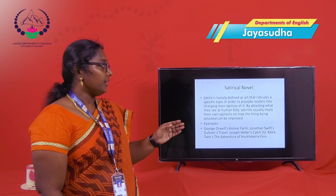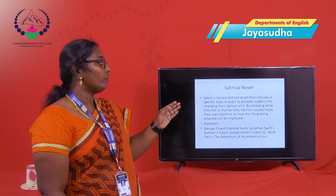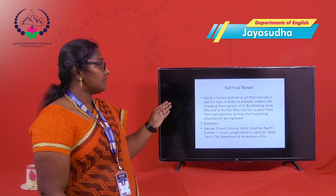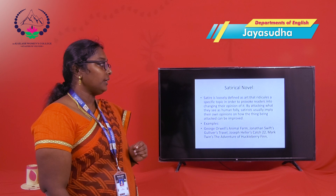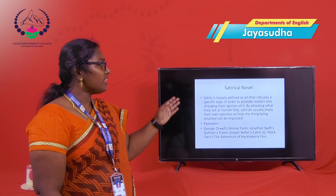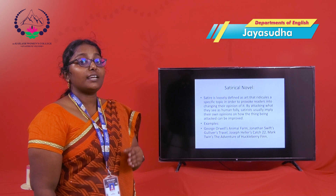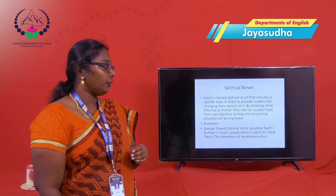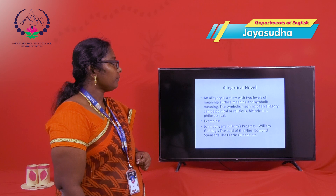The next type is the satirical novel. The satirical novel ridicules a specific topic in order to provoke the reader into changing their opinion, by attacking human folly. Satirists usually imply their own opinions and how the thing being attacked can be improved. Examples of satirical novels are George Orwell's Animal Farm, Jonathan Swift's Gulliver's Travels, Joseph Heller's Catch-22, and Mark Twain's The Adventures of Huckleberry Finn.